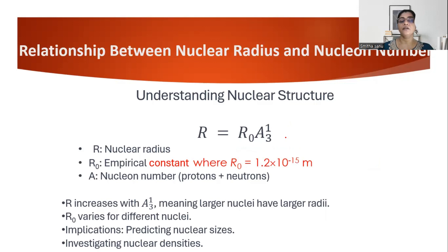We will use an important equation: the radius of a nucleus is directly proportional to the cube root of the mass number A, expressed as R = R₀ × A^(1/3), where R₀ is the empirical constant equal to 1.2 × 10⁻¹⁵ meters, and A is the number of protons plus neutrons inside the nucleus. Any nucleus with a higher mass number will have a bigger radius. Using this derivation, we will also investigate nuclear density.